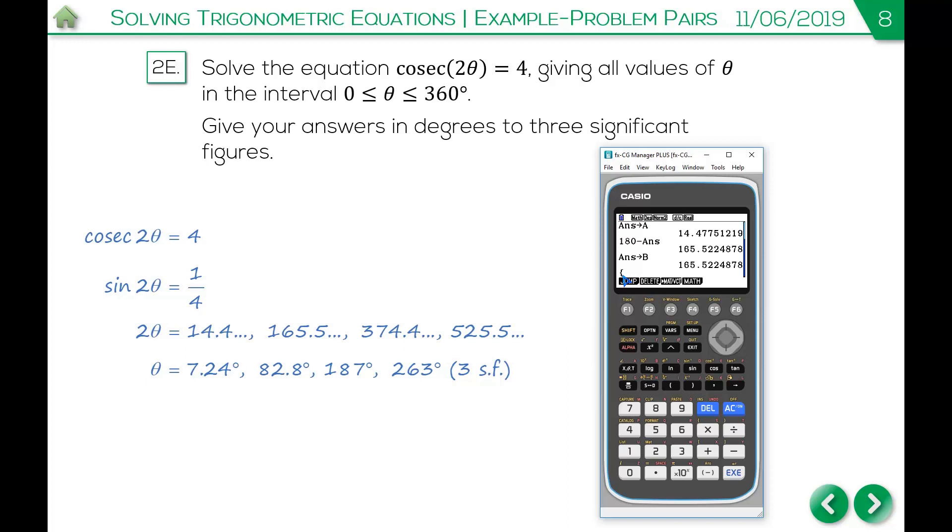So I need to press shift and then the multiplication key. It opens the curly bracket. I'm going to put A in first. Then I'm going to use a comma. And then I'll put B in. And then another comma. And then I'm going to do A plus 360. And then another comma. And then I'm going to do B plus 360.